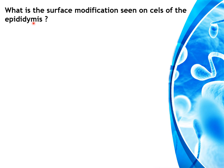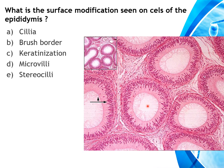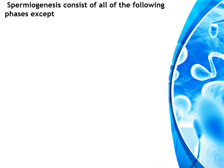Next question: what is the surface modification seen on the cells of the epididymis? Options are cilia, brush border, keratinization, microvilli, or stereocilia. The section of the epididymis shows it is lined by pseudostratified epithelium with stereocilia. The correct answer is stereocilia.